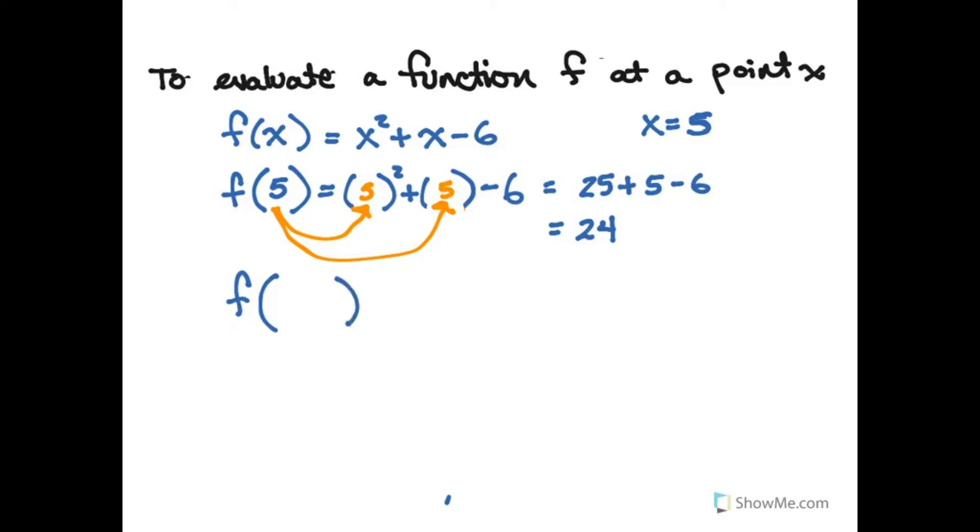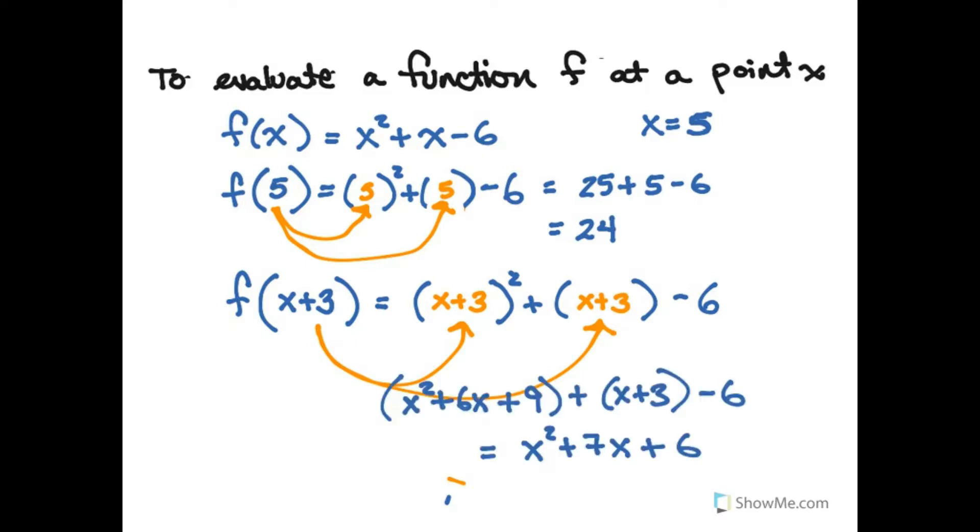I could find f of x plus 3. And in that case I would take the place where x was and I would replace it with x plus 3. So I'm evaluating the expression for another expression. So I put x plus 3 in those places and I would simplify and find that it's x squared plus 7x plus 6.